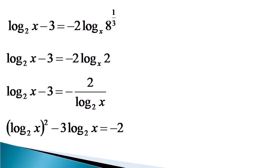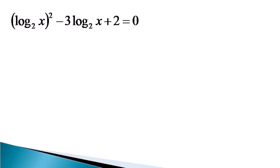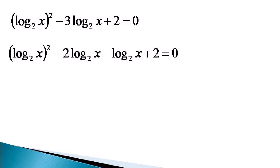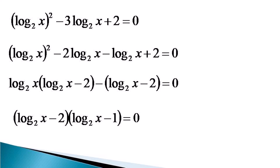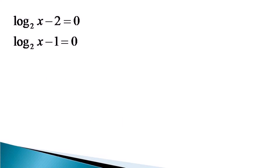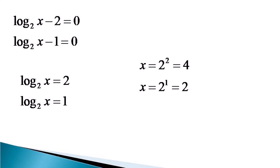Now, we multiply log x to the base 2 on both sides, so we get a quadratic equation in log x to the base 2. We factorize the whole equation to get (log x to the base 2 minus 2) · (log x to the base 2 minus 1) = 0, which gives us two values of log x to the base 2: 2 and 1. From the definition of log, we get two values of x: 2 squared and 2 to the power 1, or simply 4 and 2.